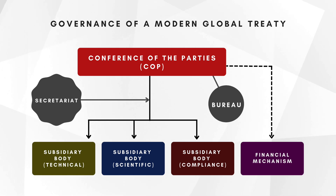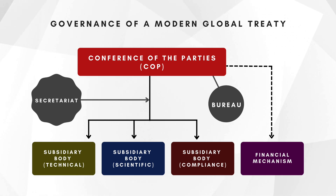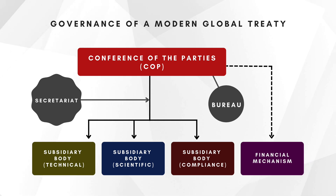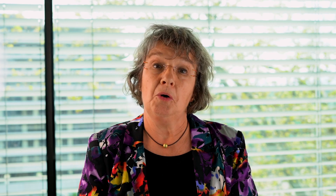Finally, some treaties feature a financial mechanism — an international body that supports or funds projects in eligible countries, mostly developing countries, in relation to the objective of the treaty. The financial mechanism can be a subsidiary body of the treaty or an independent body; both models exist.